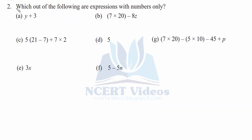Question 2: Which out of the following are expressions with numbers only? So, we have to find which of the expressions have numbers only. Here we have a variable, so it is not numbers only — we will cross it. Now, here we can see 7 into 20 are numbers, but minus 8z — z is not a number, it's a variable. Therefore, we will cross it again.